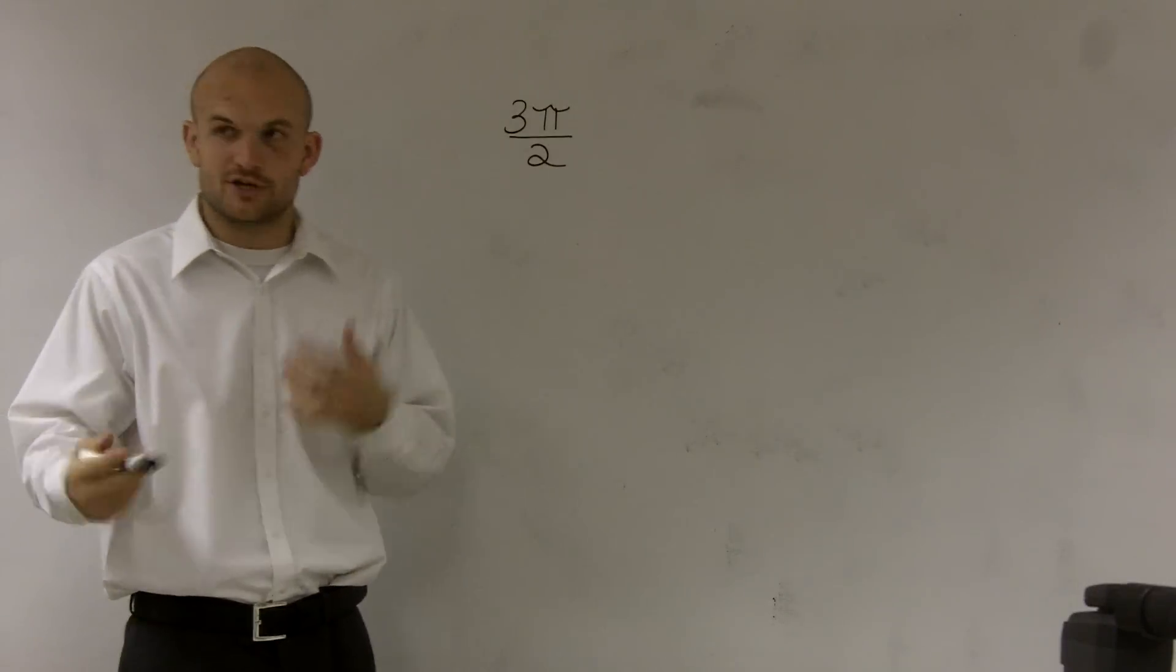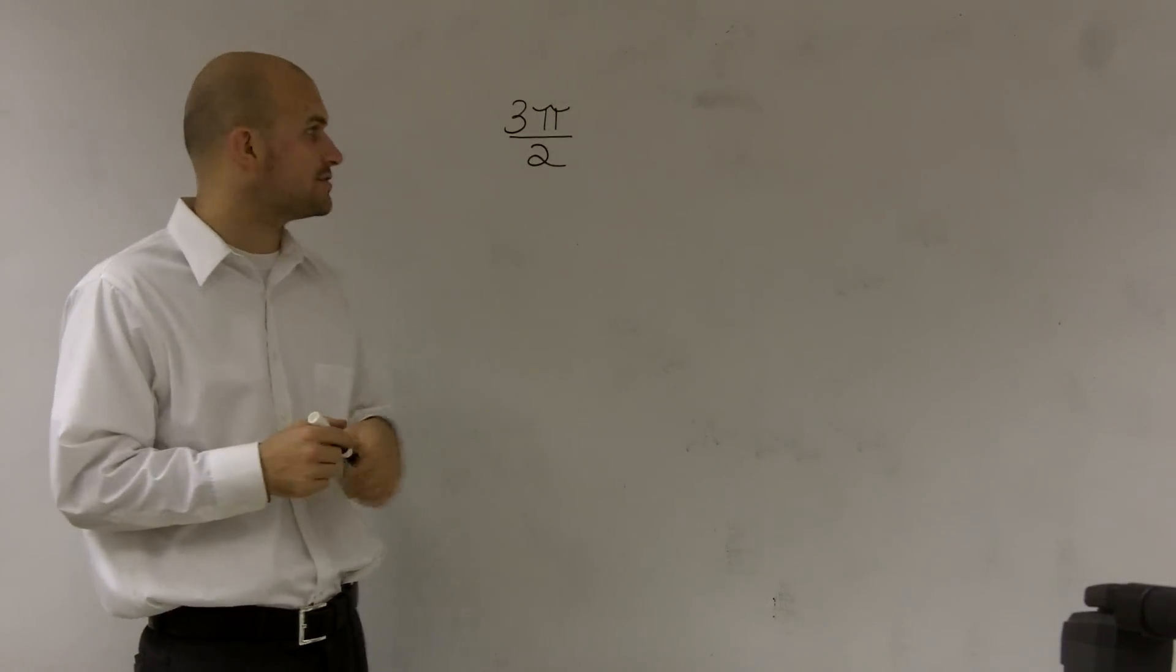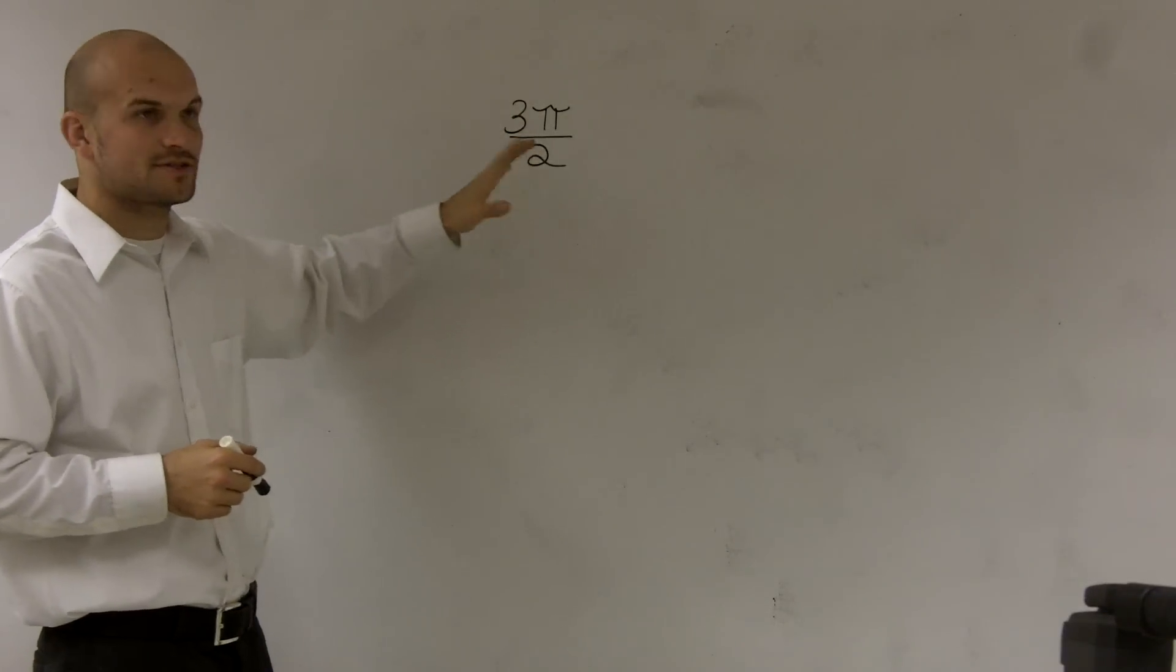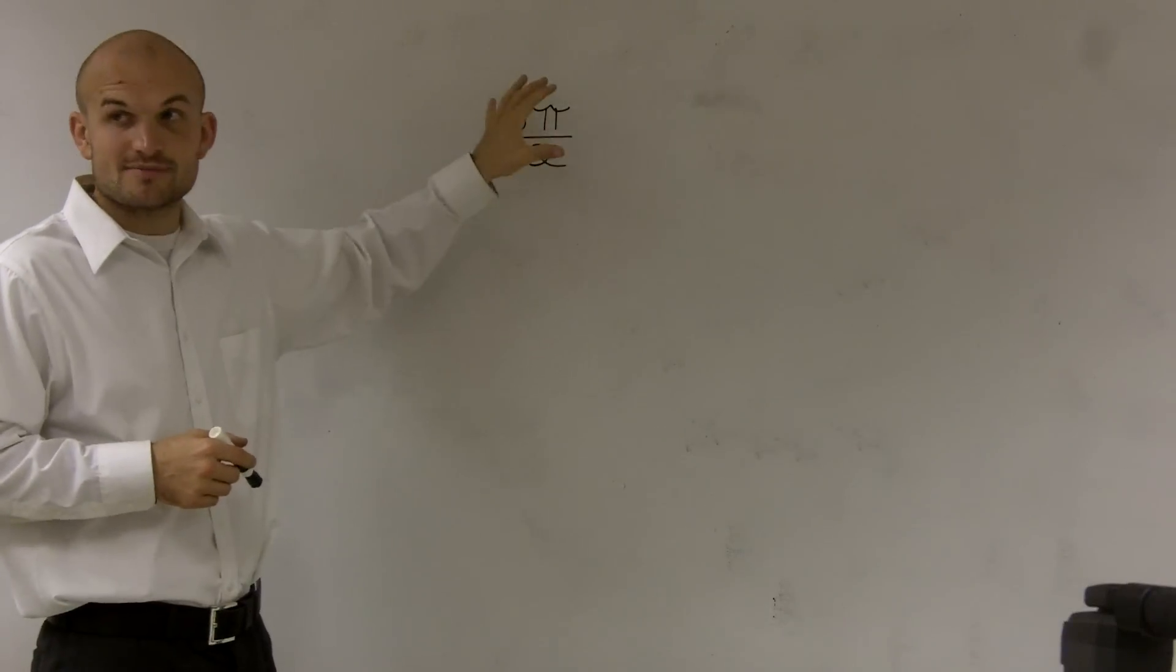So now we're going to do the exact opposite, but we need to think of a ratio that we're going to use. So if you guys remember, if this is 3π over 2, that's in terms of radians, right?